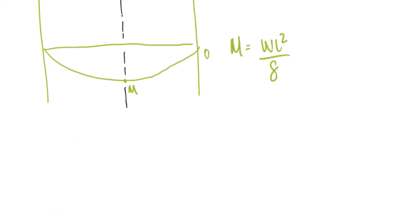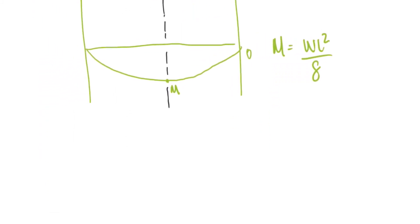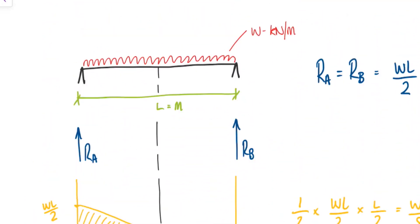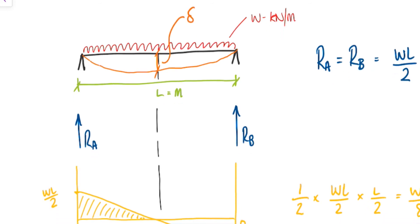So you can either remember this, or if you can get your shear forces, you can get your moment. The final part of the puzzle will be the deflection. The deflected shape we'd expect to see for a system like this would be similar to the bending moment diagram, with the maximum deflection delta being in the centre of the beam.